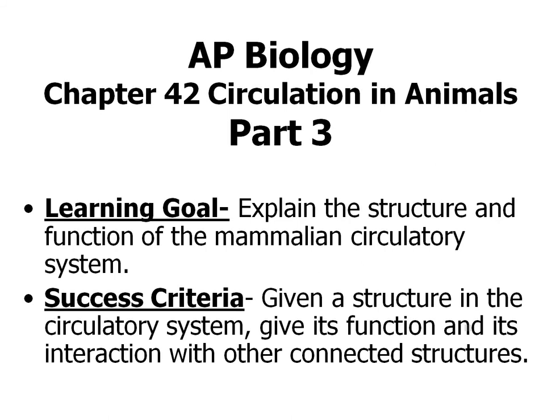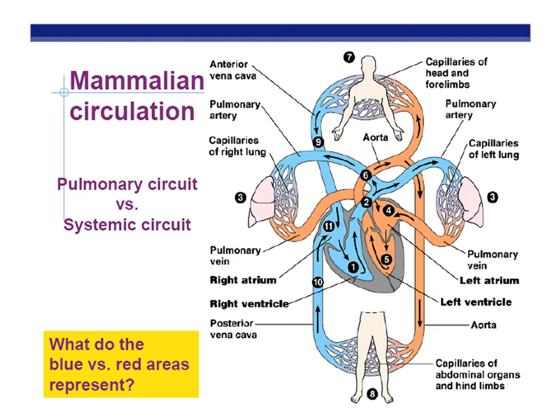AP Biology, Chapter 42, Part 3. We left off Part 2 with a review of how the blood circulates throughout the mammal's body.